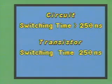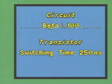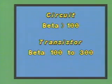We've already assumed that the switching time is adequate. With a beta range from 100 to 300, we've exceeded the bottom line beta. Clearly, this device is more than adequate for this application.